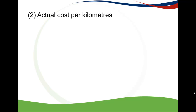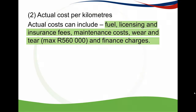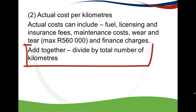The next step is to calculate your actual cost per kilometre. The actual costs are usually given as the cost for the year. Costs you can include are fuel, licensing, insurance fees, maintenance costs, wear and tear, and finance charges. Wear and tear is the cost of the car including VAT, excluding finance charges, divided by 7 — but the cost of the car is capped at a maximum of 560,000 Rand. The same cap applies to finance charges. Add all costs together, then divide by the total number of kilometres to get the actual cost per kilometre.